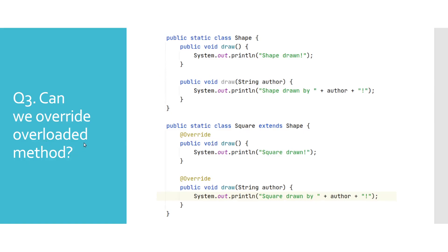Can we override overloaded methods? Overriding overloaded methods is perfectly fine, as overloaded methods are just regular methods. In this example we have class Shape which has an overloaded method draw, and in the subclass Square we have overridden both of them.